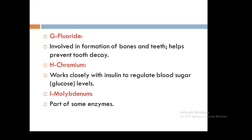Chromium works closely with insulin to regulate blood sugar or glucose levels. It is found in unrefined foods, especially liver, yeast, whole grains, nuts, and cheese.